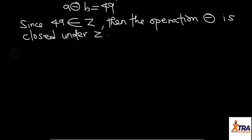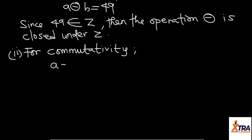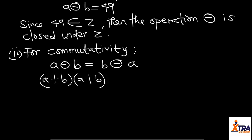For part (ii), we are considering commutativity. Remember that for commutativity, A⊕B must equal B⊕A. We know A⊕B is already given as (A+B)(A+B). So B⊕A will also be (B+A)(B+A).